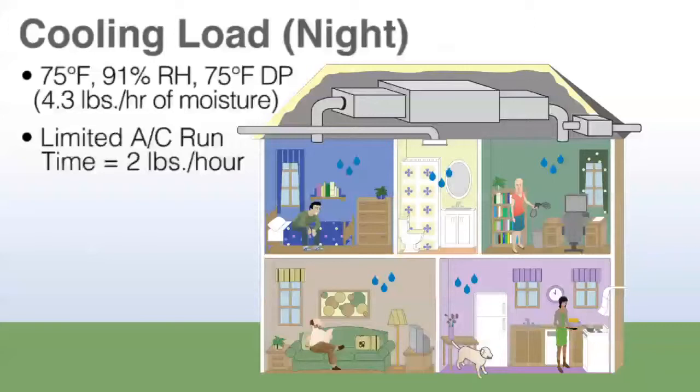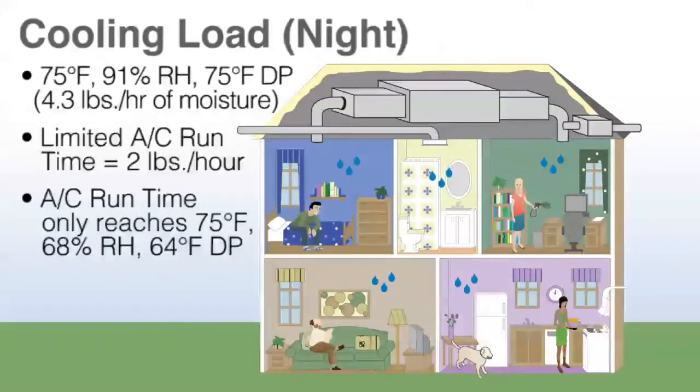Typically the AC is going to run quarter time during the evening, which removes only two pounds per hour. With AC limited run time, we can only reach 75 degrees and 68% RH, which is a 64 degree dew point or 88 grains per pound. So understand that during the day the house was at 50% RH, and as the evening proceeds we lose the humidity control we wanted. Gradually the house will build up to that 68% RH as time goes by.